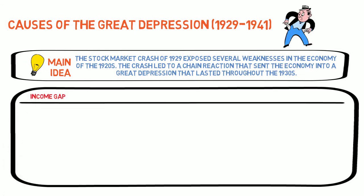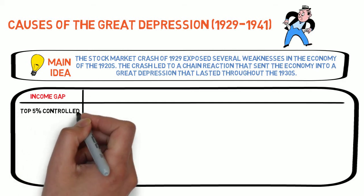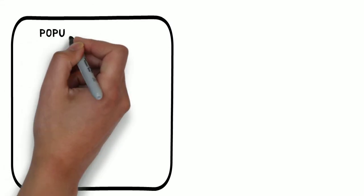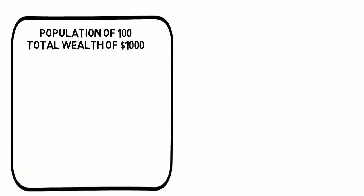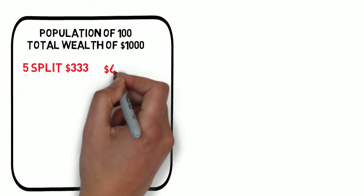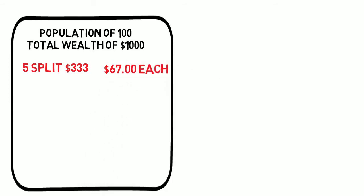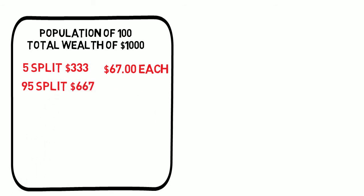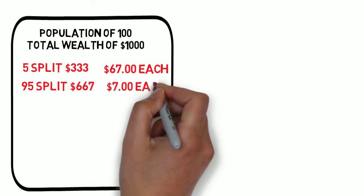One economic factor that contributed was the large income gap in the 1920s. Completely accurate statistics are difficult to develop, but the trend was pretty apparent. By the late 20s, the top 5% of the American population controlled approximately one third of the nation's wealth. To illustrate this, consider the following example. Imagine we had a population of 100 people and a total wealth of $1,000. If the top 5% controlled one third of that wealth, 5 people would split $333, which works out to about $67 each. 95 people would then split the remaining $667, which works out to $7 each.